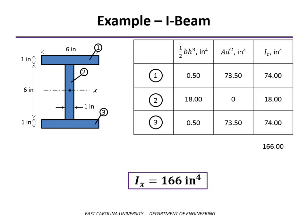What you can see is that most of the contribution is from the flanges, and most of the contribution of the flanges is due to the Ad² term. In other words, the most efficient way to build a beam, which explains why wide flange beams are used a lot, is to get the material as far away from the neutral axis as possible.